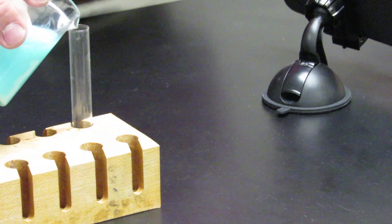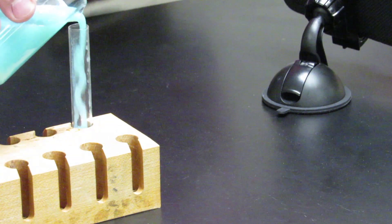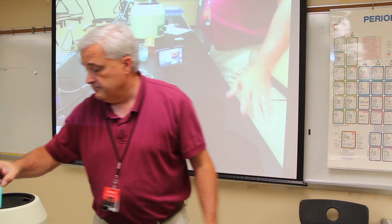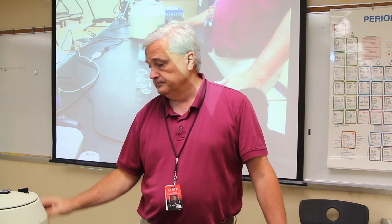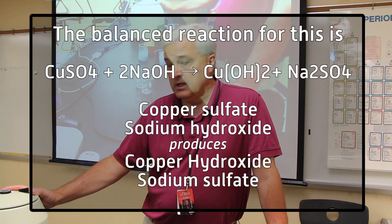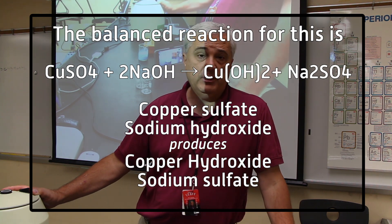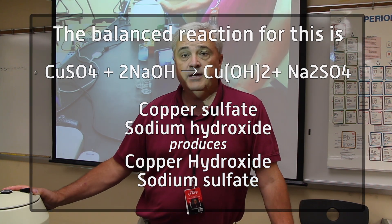But we're going to use the centrifuge and speed that process up. I'm going to put about half of the test tube in, and we'll speed this up. What we're expecting to see happen is the centrifuge will separate the particles by density, and we're going to end up with the particles at the bottom and the liquid at the top.